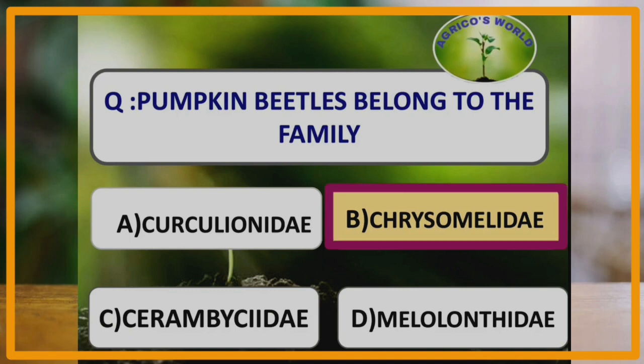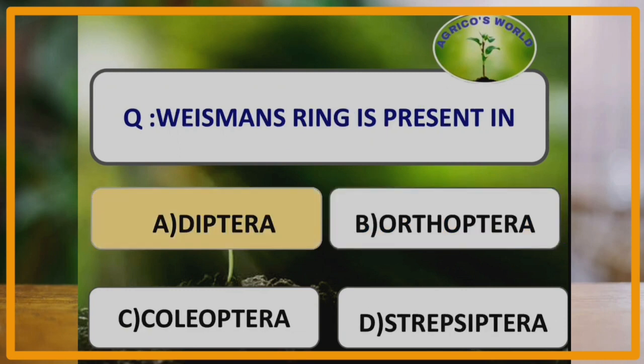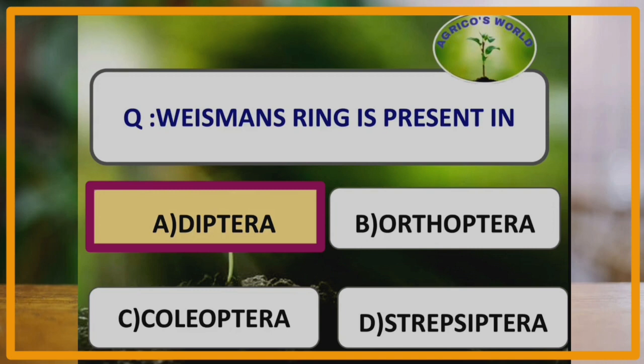Pumpkin beetles belong to the family Chrysomelidae, in which the grubs feed on the root of the crop and adults feed on the leaves and flowers. Weismann's ring is present in the order Diptera.